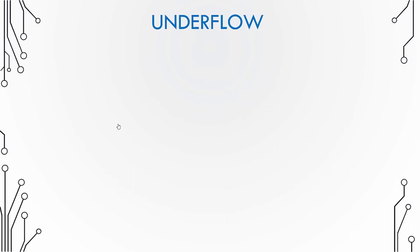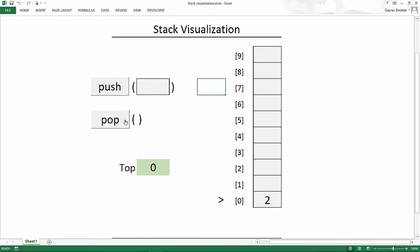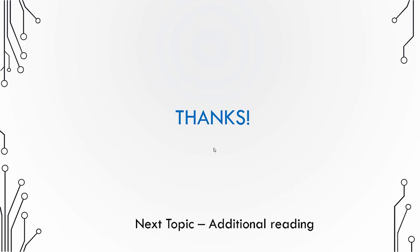Now let's check what is a stack underflow. When the stack is empty and you try to pop an element, it is said there is a stack underflow because there is nothing to pop. Once the last element is popped, the top pointer decrements from zero to minus one, meaning the stack is empty. If you try to pop again, it will show a stack underflow.